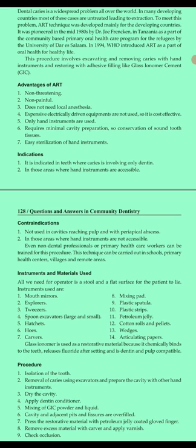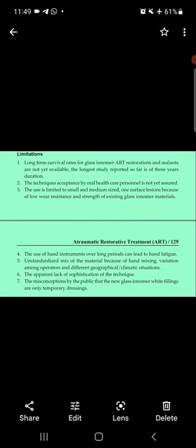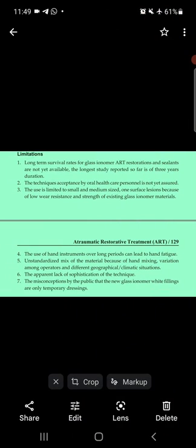The procedure has nine steps: first, isolation of the tooth; second, removal of caries using excavator and preparation of the cavity with other hand instruments; third, dry the cavity; fourth, apply dentine conditioner; fifth, mix GIC powder and liquid; sixth, fill adjacent pits and fissures; seventh, press restorative material with a petroleum jelly-coated gloved finger; eighth, remove excess material with a carver and apply varnish; and ninth, check occlusion.